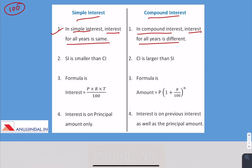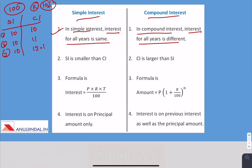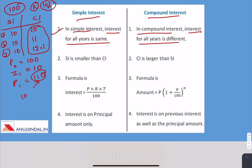For example, let's say the principal is 100 and the rate of interest is 10%. In case of simple interest, the interest will be Rs 10 for each year. But in compound interest, the interest will increase: it will be 10 for the first year, 11 for the second year, and 12.1 for the third year. In compound interest, we calculate interest on both principal plus accumulated interest. So our P1 becomes 110; then 10% of 110 gives 11 as the second-year interest.